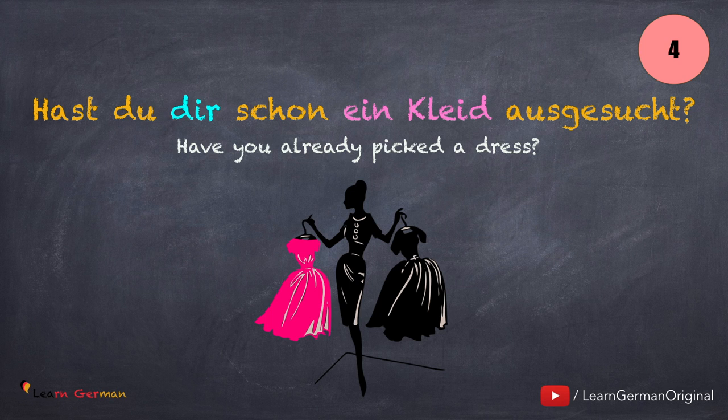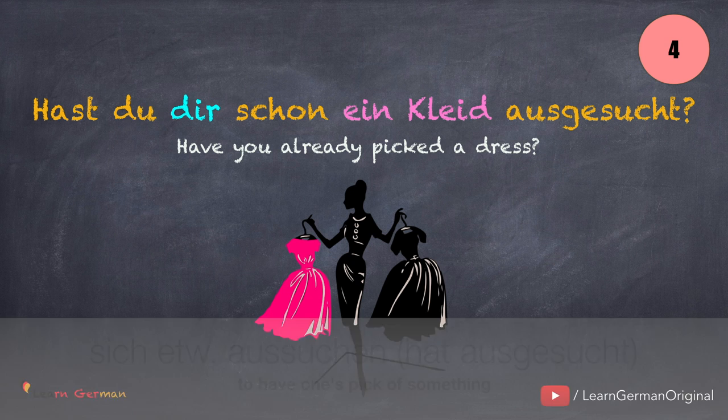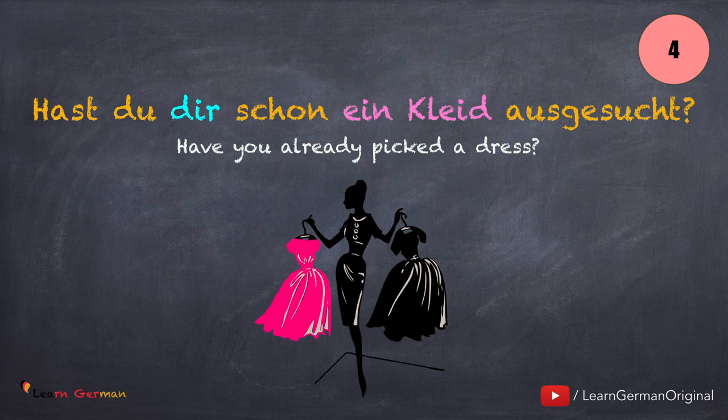Hast du dir schon ein Kleid ausgesucht? The verb here is sich aussuchen, and you should learn sich etwas aussuchen, where sich is the dative pronoun. Sich aussuchen is a reflexive verb. You will learn reflexive Verben in B1, but if you want to learn them now, you can watch our video on the same. The link is given below.